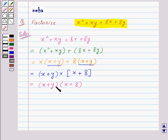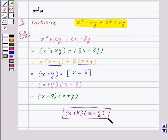So, x plus y and x plus 8 are the two irreducible factors of the expression x squared plus xy plus 8x plus 8y. We can also write this as x plus 8 into x plus y. Thus, x plus 8 into x plus y is the final answer to this question.